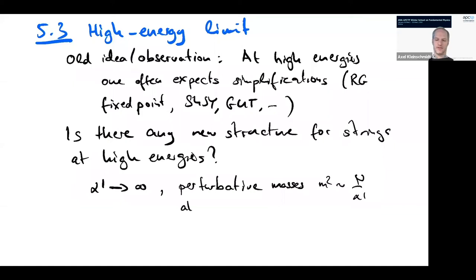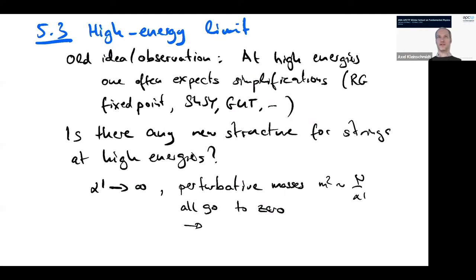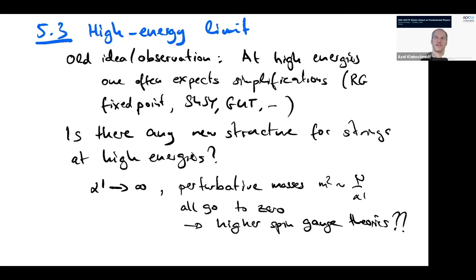You would expect an infinity of massless states, and massless states typically have more symmetries than massive states — additional gauge symmetries and things like that. So maybe this theory of all these massless states could have more structure than the string itself. One idea pursued in this direction is whether all these massless states with their additional gauge symmetries are related to higher spin gauge theories. There is quite some work trying to relate independent work on higher spin gauge theories to the alpha prime going to infinity limit of the string — clearly the opposite limit to the low energy limit.